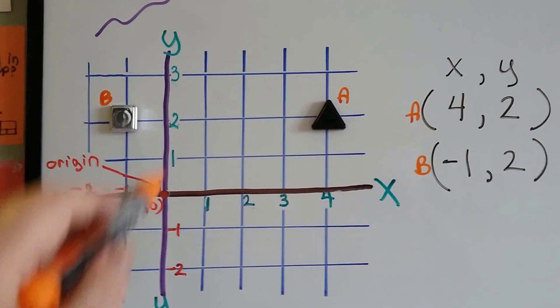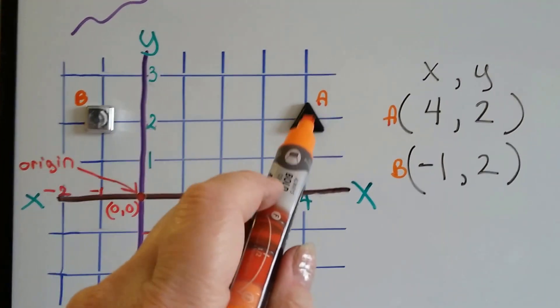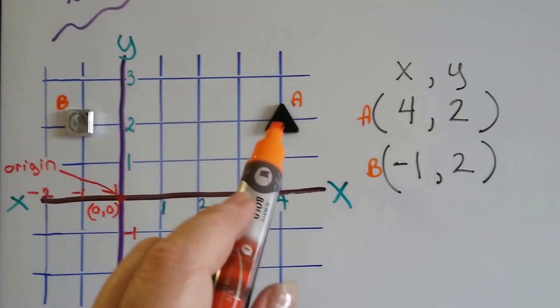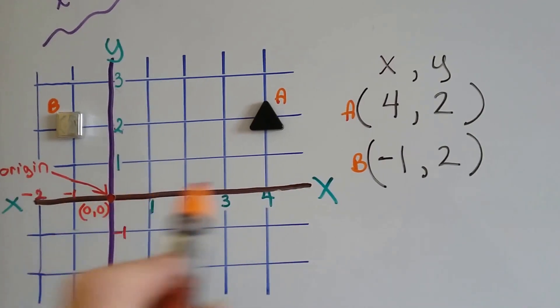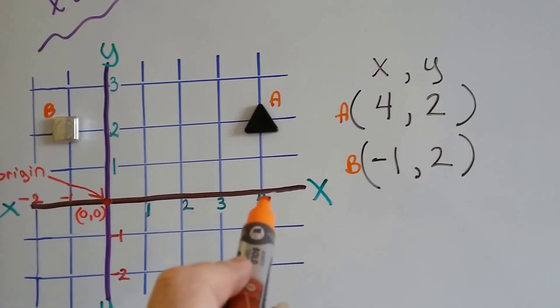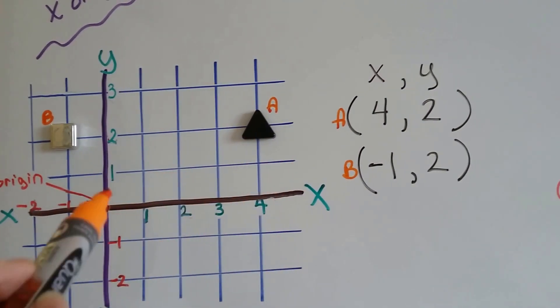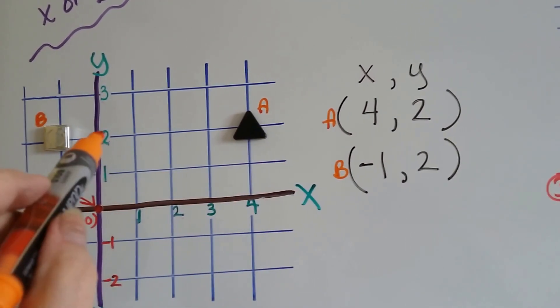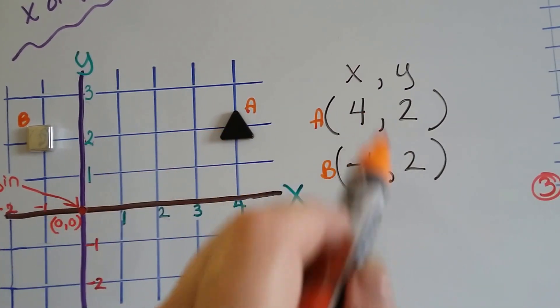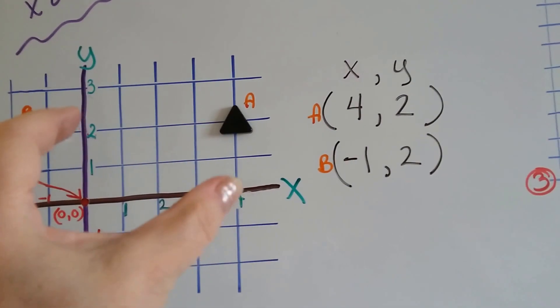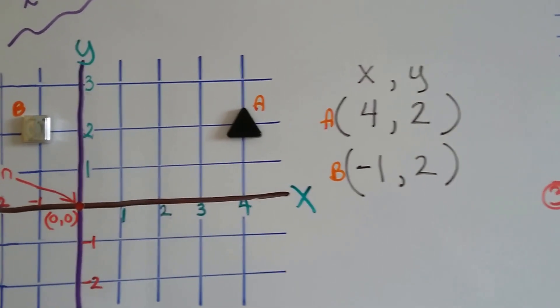Point A is at... We always do x first. It's at x, which is the side-by-side one. It's at x4 and y2. On the y number line, it's at the 2 and it meets at the 4. 4 comma 2. If you go to these two spots, that's where they meet at point A, right there.